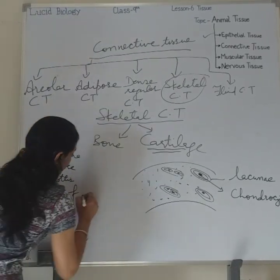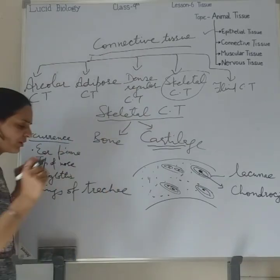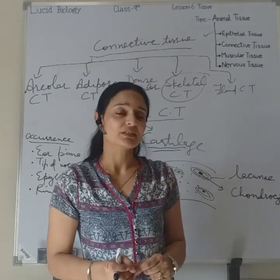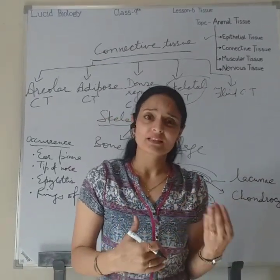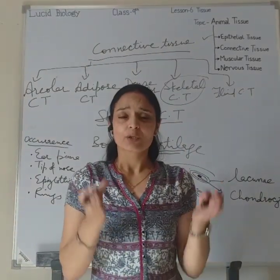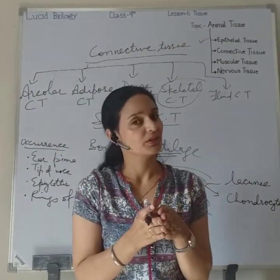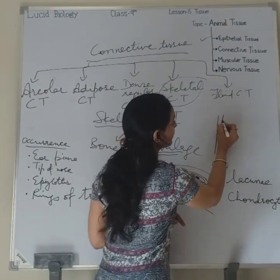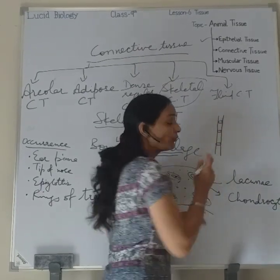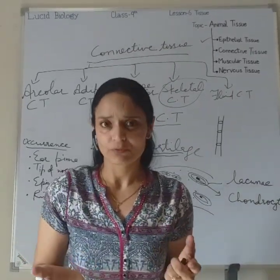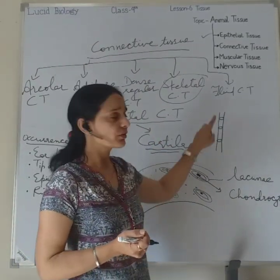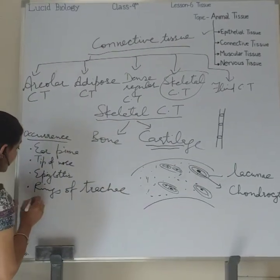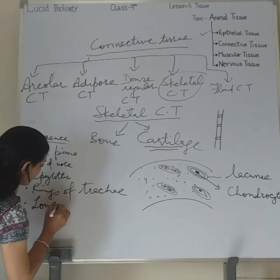Next, cartilage is found in the rings of the trachea. The trachea is the windpipe. In the nasal cavity and trachea there is mucus, and during exhalation the walls of the trachea could collapse. This does not happen because there are rings of cartilage in the trachea which keep it open all the time.